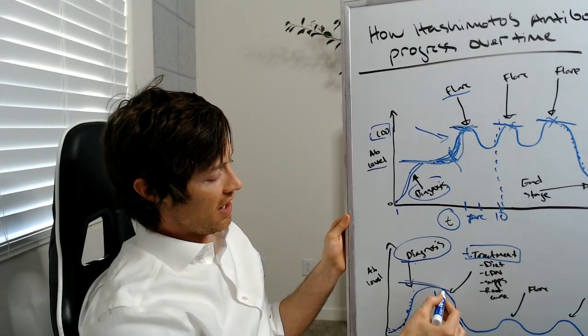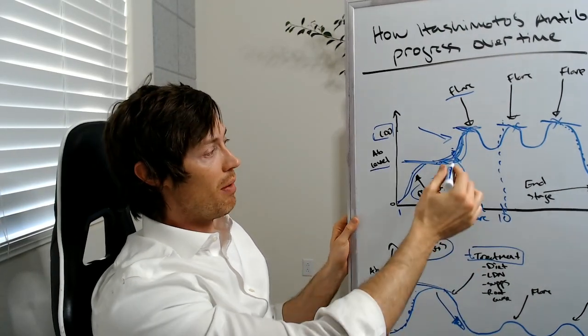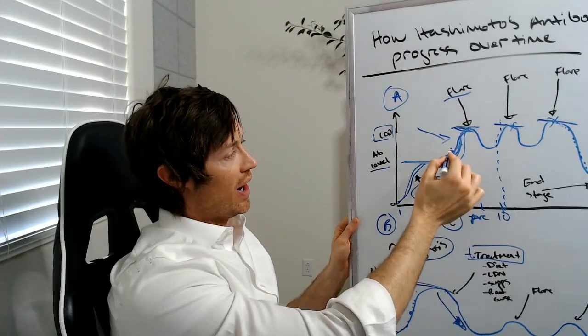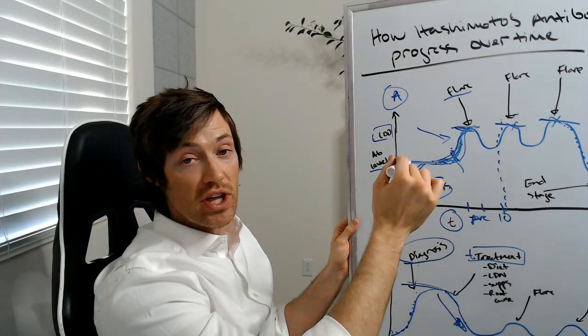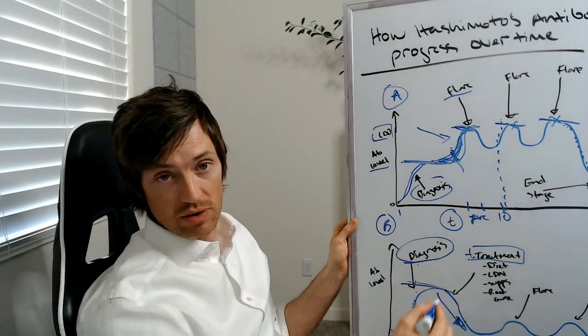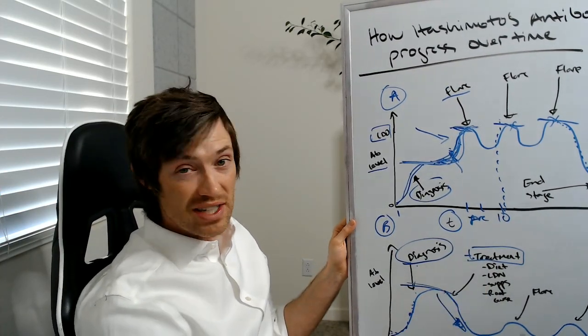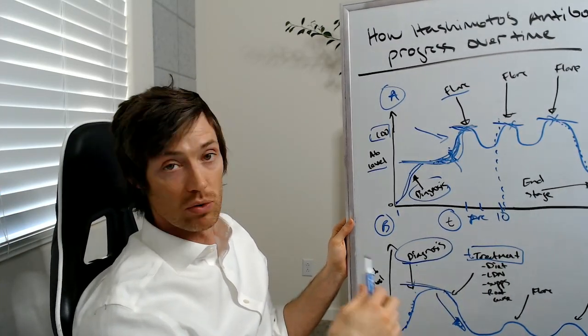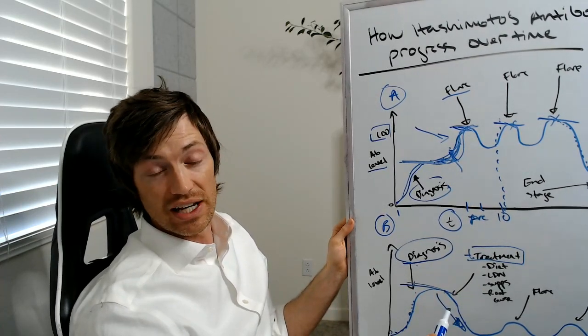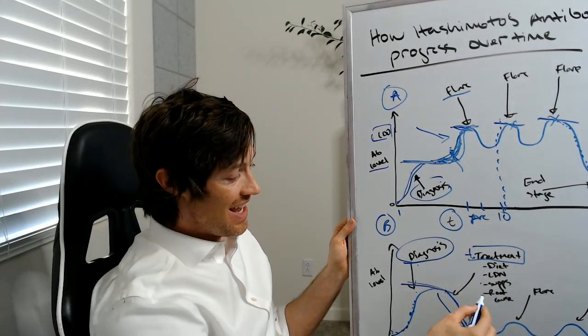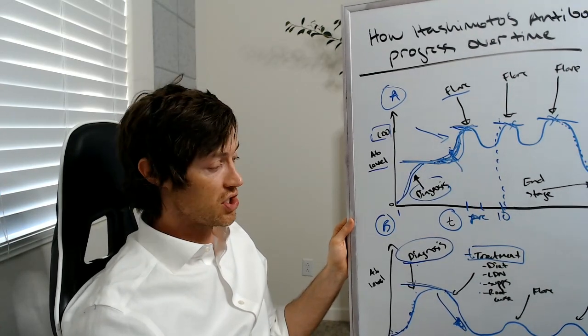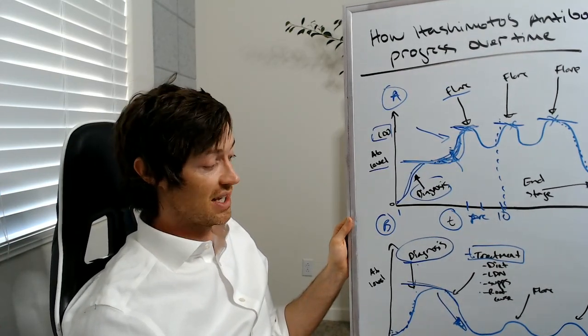So what happened here that was different between this person and this person? Person A didn't do anything to treat the underlying immune dysfunction associated with Hashimoto's. Person B did do some sort of treatment. So what type of treatment did they do? Plenty of things can help lower your thyroid antibodies. I have other videos completely on that topic, but things like diet, medications used off-label, things like low-dose naltrexone, certain supplements can do this. And then of course, finding the root cause, treating things like Epstein-Barr viral infections, H. pylori, things like that.